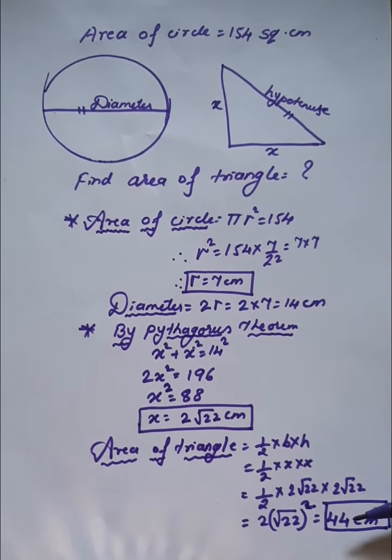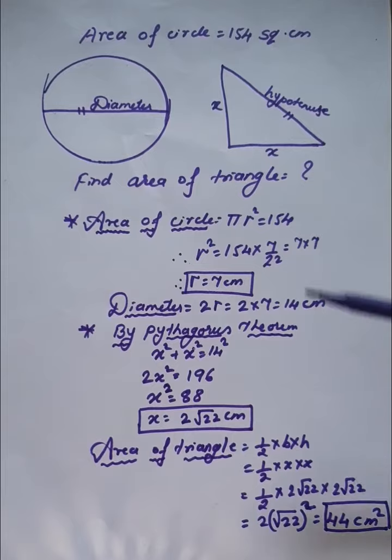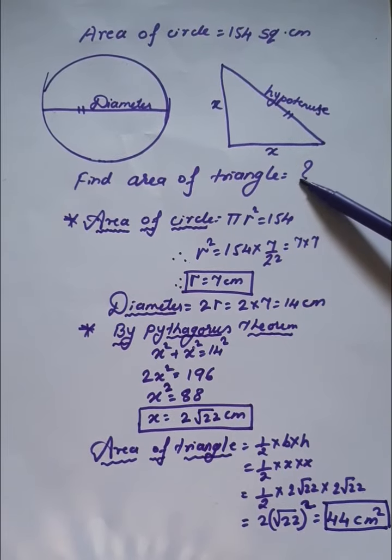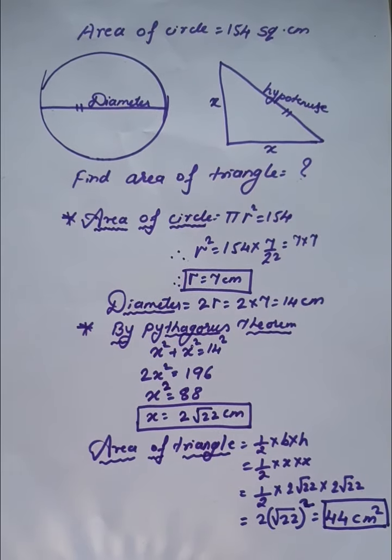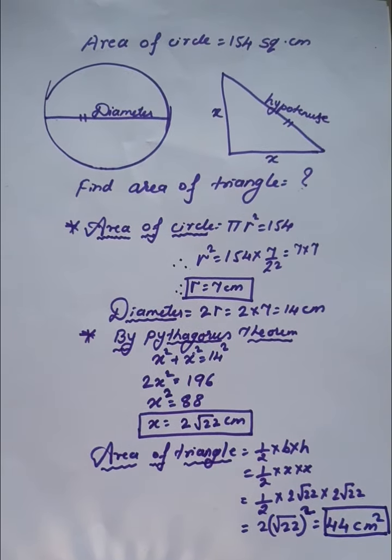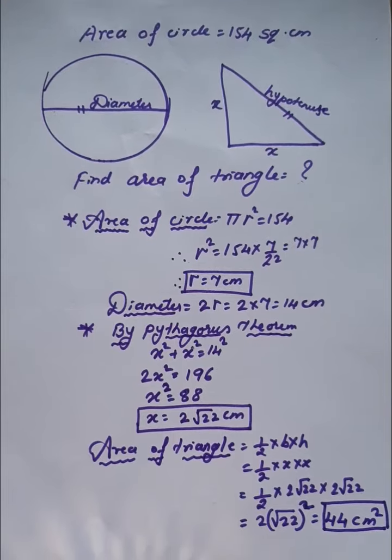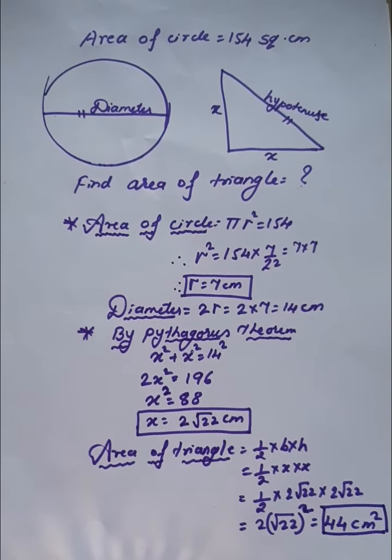The final answer is 2 times 22, which equals 44 square centimeters. This is how we find the area of the triangle when the area of the circle is given and the diameter equals the hypotenuse. This is typically a 4 to 5 marks question. Thank you.